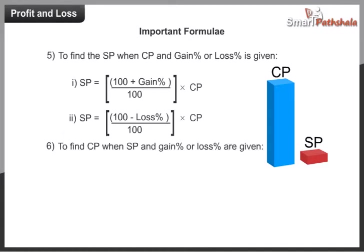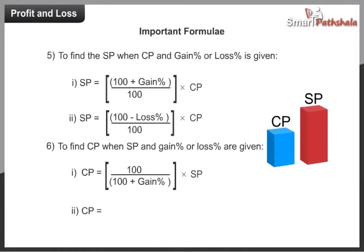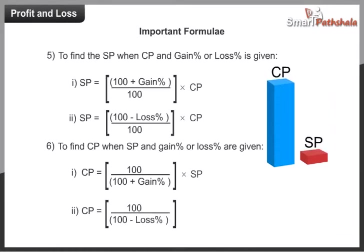6. To find CP when SP and gain percent or loss percent are given: 1. CP is equal to 100 divided by (100 plus gain percent), into SP. 2. CP is equal to 100 divided by (100 minus loss percent), into SP.